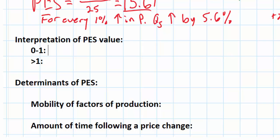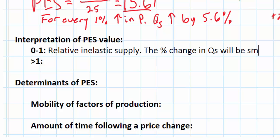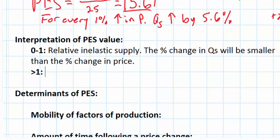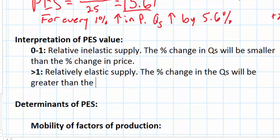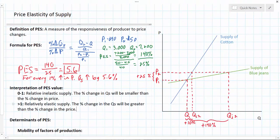Any price elasticity of supply coefficient between zero and one represents relatively inelastic supply — the percent change in quantity supplied will be smaller than the percent change in price. However, if a good such as our blue jeans has a PES of greater than one, we say that it has relatively elastic supply, meaning producers are relatively responsive to price changes and the percent change in quantity supplied will be greater than the percent change in the price. Later in this lesson we'll talk about some determinants of PES to understand why supply for a particular good might be elastic or inelastic.